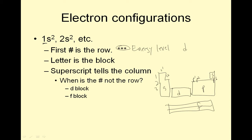Now this guy right here is S2. Helium is S2, so he's weird. D1 through D10, F1 through F14. Now we're never going to do the Fs. Superscript tells you the column. When is the number not the row? In the D block and the F block.